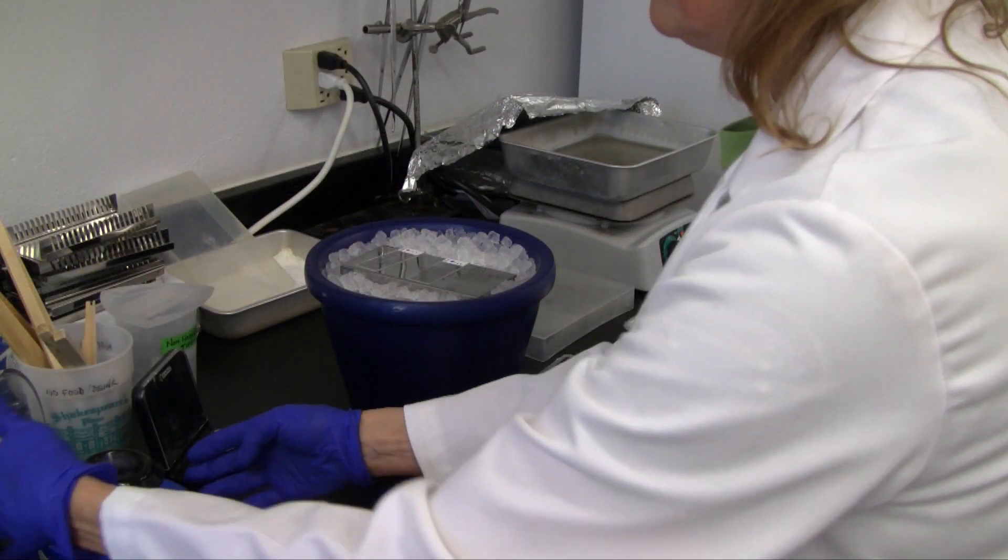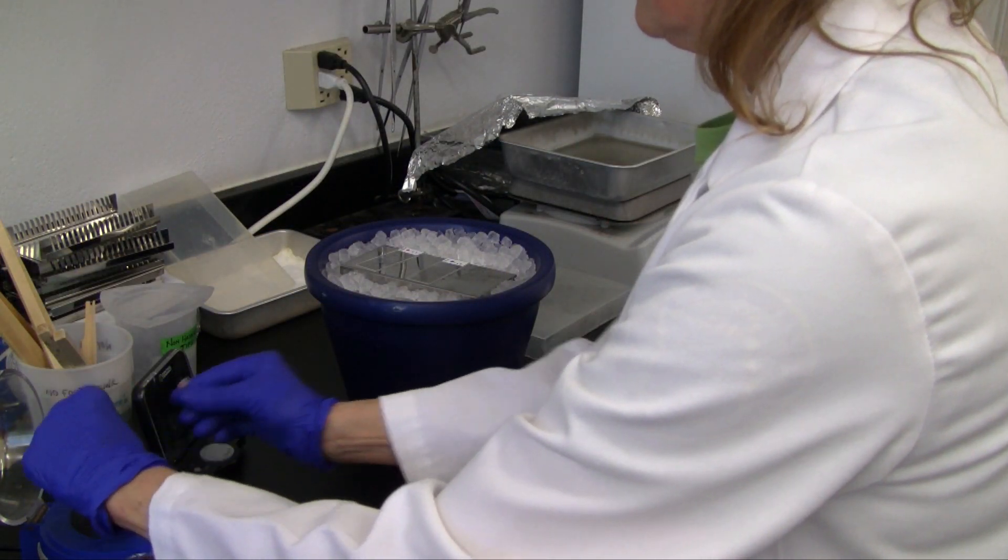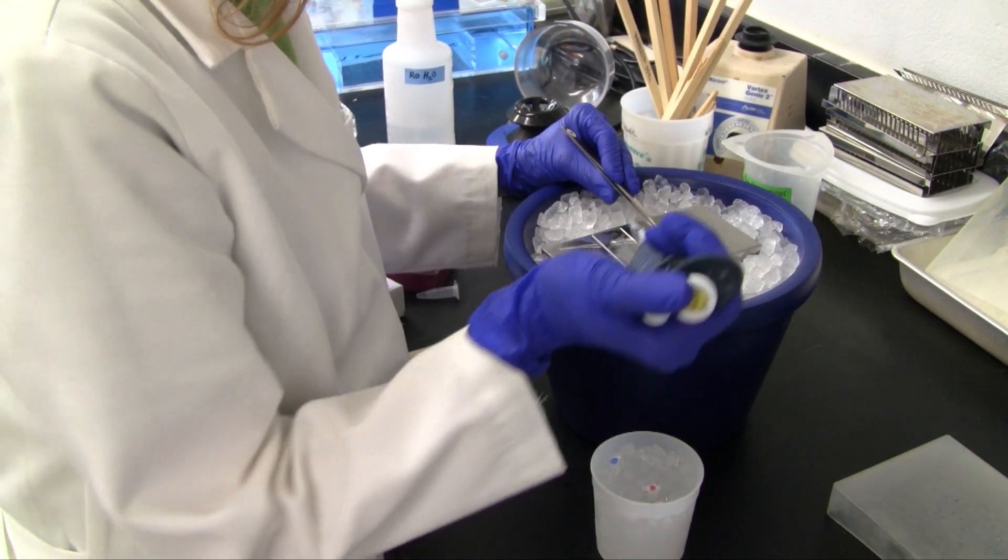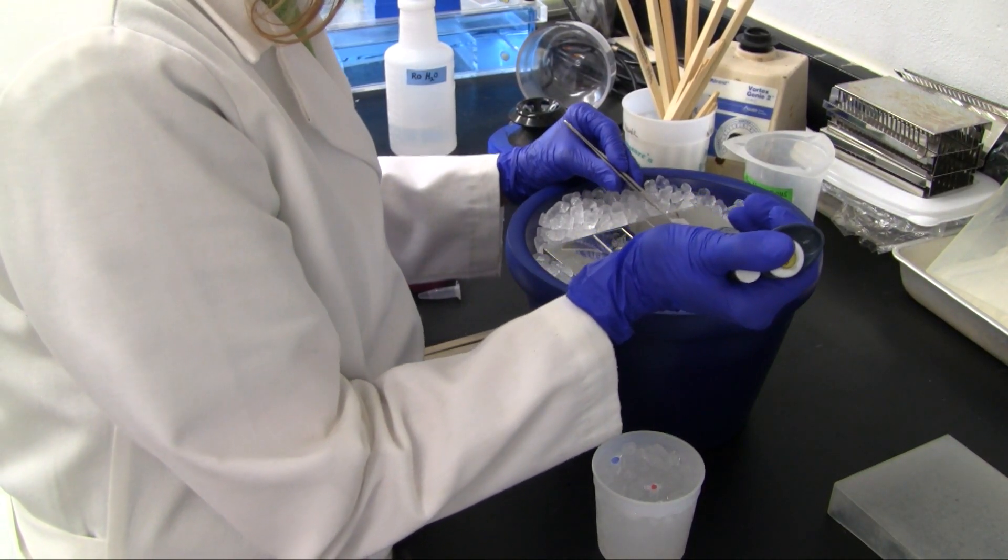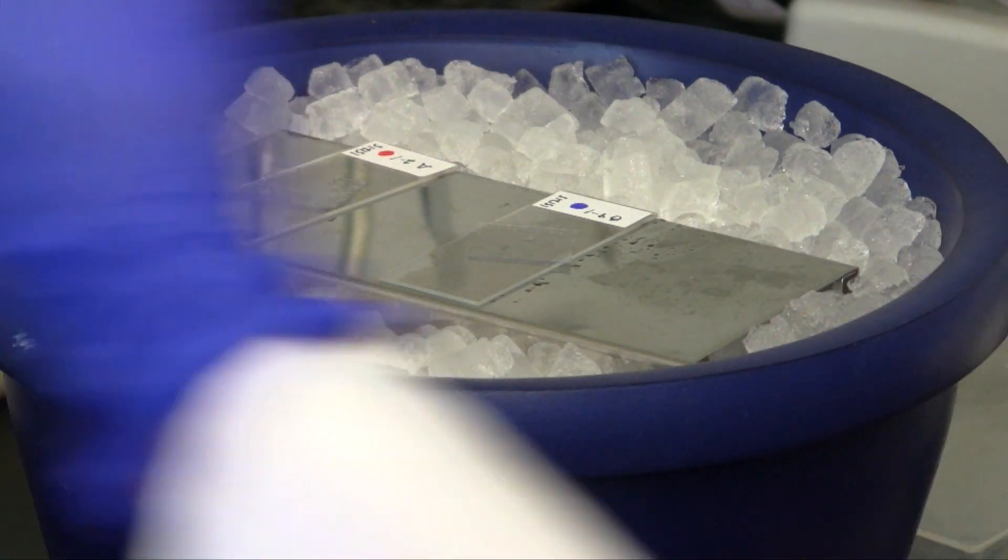The probe tubes are briefly centrifuged and returned to the ice bath. Aspirate the amount of probe needed for one slide, lift the cover slip, dispense the probe, then replace the cover slip.